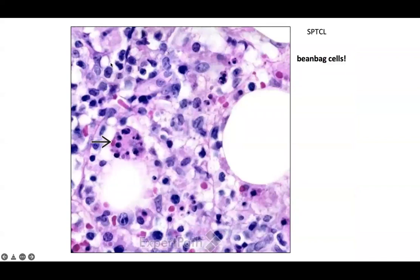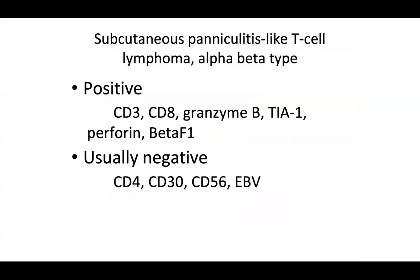Many cases of SPTCL have so-called beanbag cells — large phagocytic cells that take in cellular debris, erythrocytes, etc., looking like a beanbag. The alpha-beta subtype is usually positive for CD3, CD8, granzyme B, TIA1, perforin, and beta-F1, and usually negative for CD4, CD30, CD56, and Epstein-Barr virus expression.